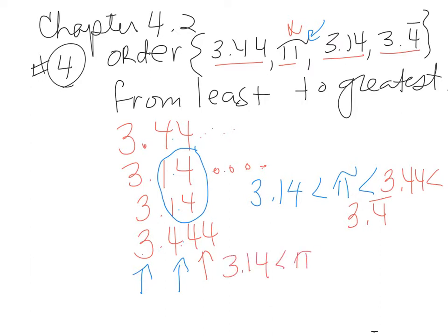3.14 is less than pi which is less than 3.44 which is less than 3.4 with a bar over it. There you go, it's in order. Thank you.